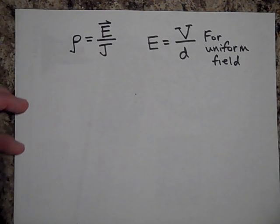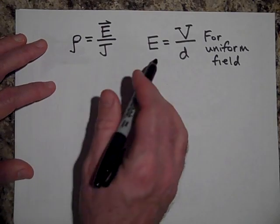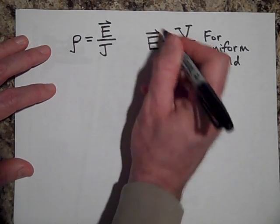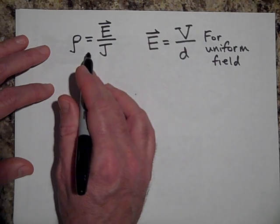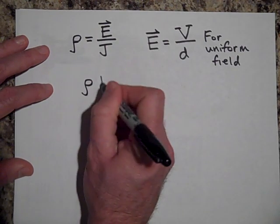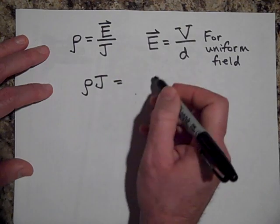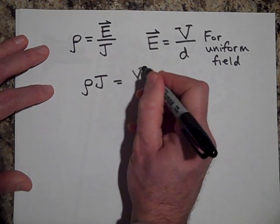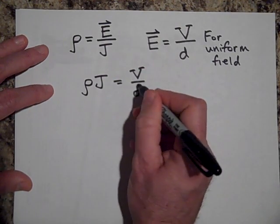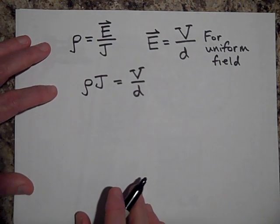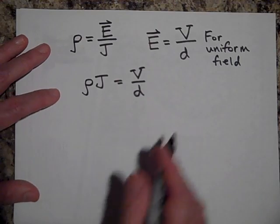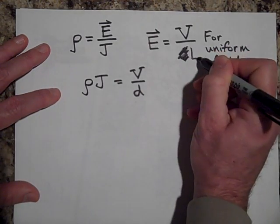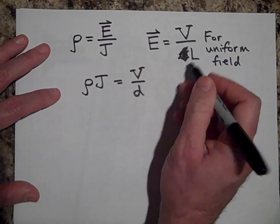Okay, so the potential is going to be Ed. So let's kind of head on back to here. Since this is electric field, let's set ρj equal to V over d. And you know what, I'm going to call this L. You'll see why—L is just the length. So it's V over L, the length.